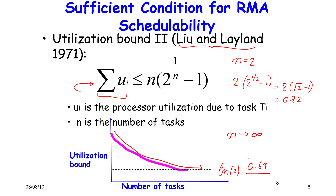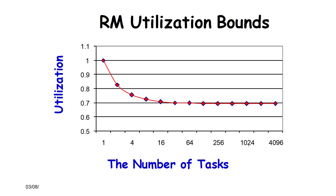RMA scheduling is simpler than EDF because, unlike EDF where we must continuously maintain variable deadlines and queues, in RMA the need for maintaining a priority queue is substantially reduced. RMA saturates at 0.69, which is the natural log of 2, meaning below this utilization you will always be successful.